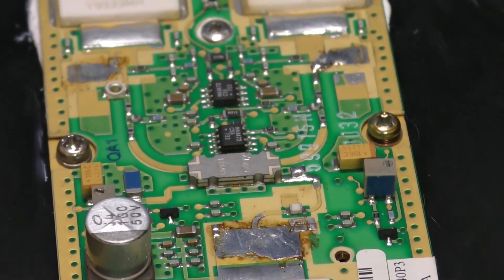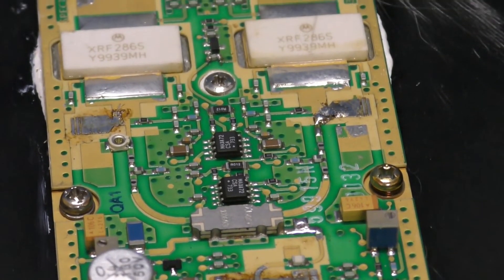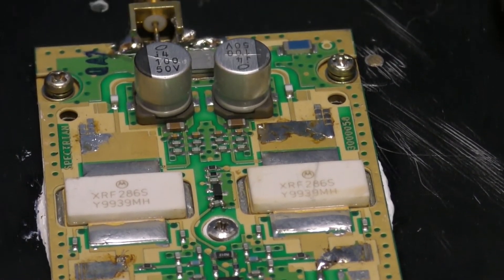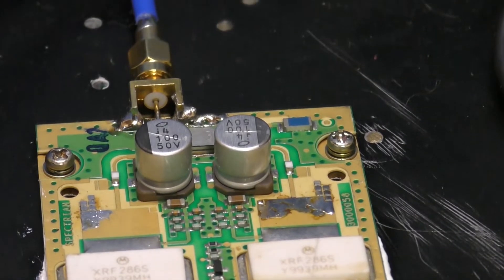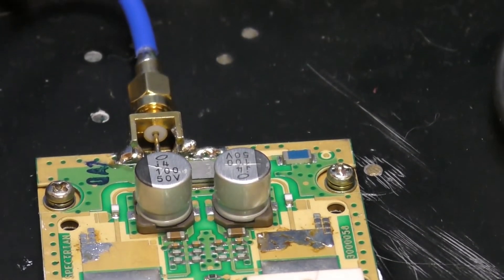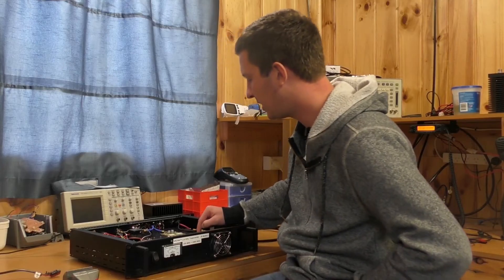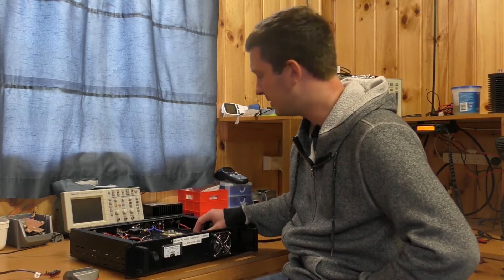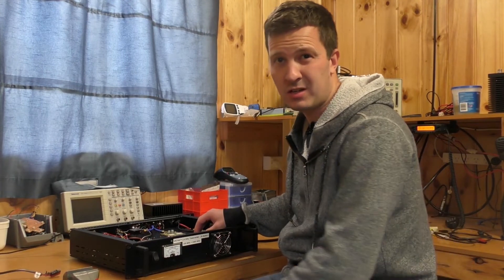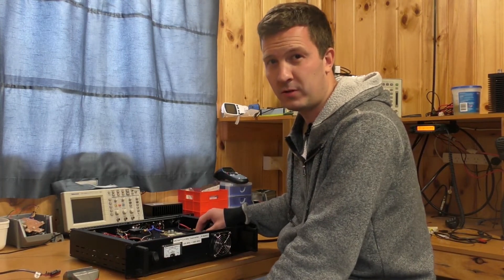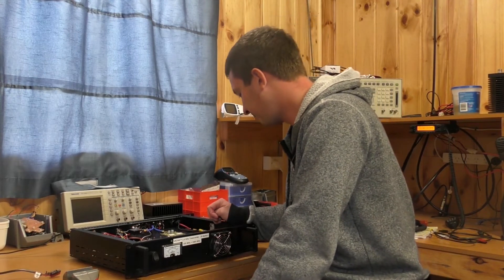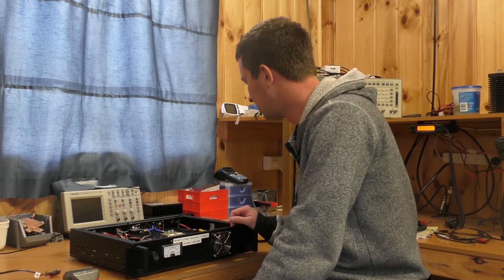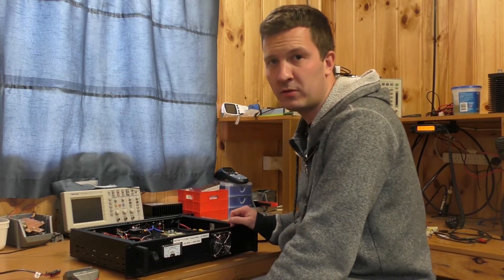At 2.4 gigahertz the gain is not quite as high, so with this particular module I've actually done a little bit of modification to the snow flaking along the strip lines here. I've managed to get 25 watts out at 12 volts and I think it's about 60 watts at 24 volts at 2.4 gigs. I'm rather happy about that but I run everything off 12 volts because I didn't think it was worth the extra three or so dB to mess around with 24 volts in the field.